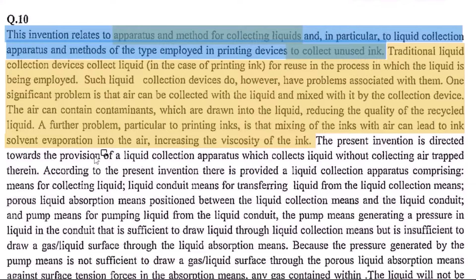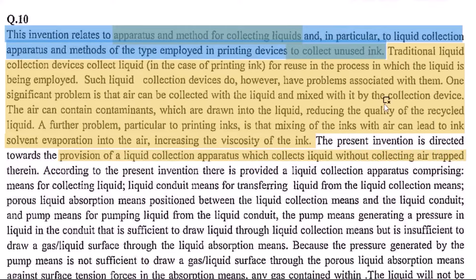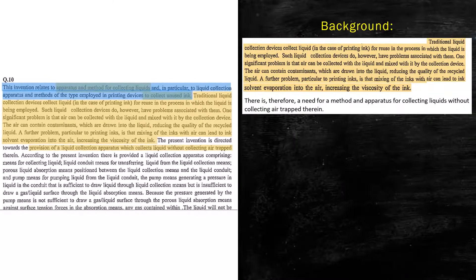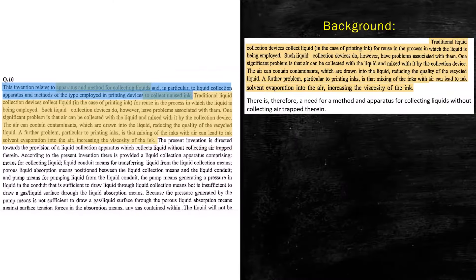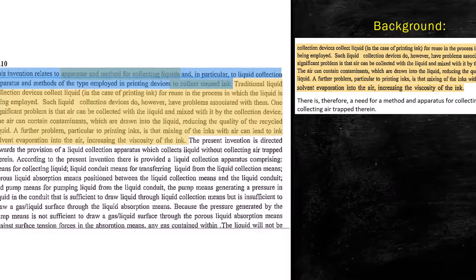Then we build the case for our invention. It says 'the present invention is directed towards a provision of a liquid collection apparatus which collects liquid without collecting air trapped therein.' So here we can identify this as the background, and we end the background by saying there is therefore a need for an invention for the purpose we have identified. At this stage, your background section is completed.